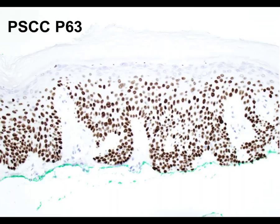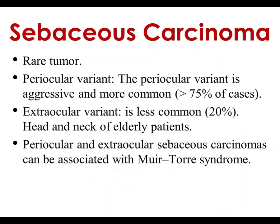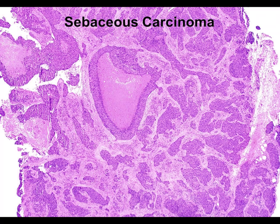Now we're going to talk about sebaceous carcinomas — this is a rare but challenging tumor. There are two variants: the periocular variant, which is the most common and most aggressive, and the extraocular variant, less common and usually seen around the head and neck. Both variants can be seen in the setting of Muir-Torre syndrome. Sebaceous carcinomas can be classified as low-grade and high-grade. Low-grade tumors can be easily identified because they have an increased number of sebocytes. However, poorly differentiated sebaceous carcinoma with no sebocytes is the problem.